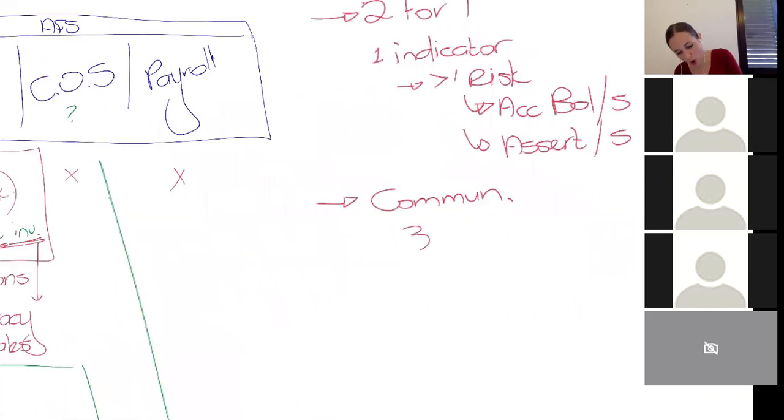That's why communication is so important because you stuff it up once and you lose every single mark. That is the most important thing. Now, the communication, you always have to tell me three things. If you do not include all these three things in your communication of risk, whether it's financial statement level or assertion level, both of them, same thing. You don't tell me all three, you get zero. Very, very important.